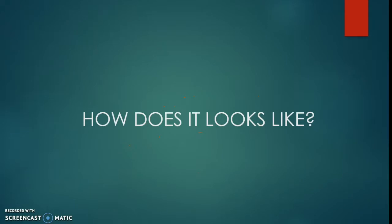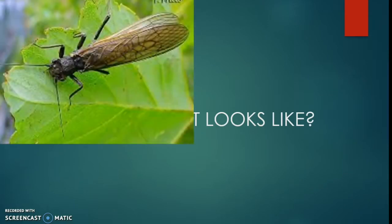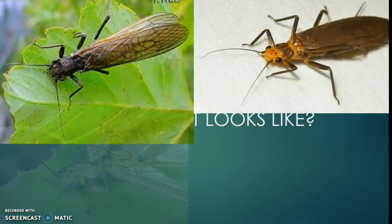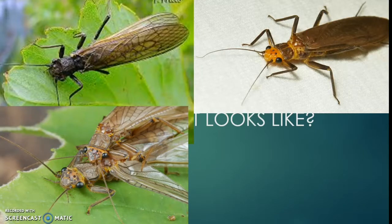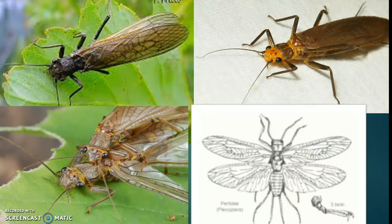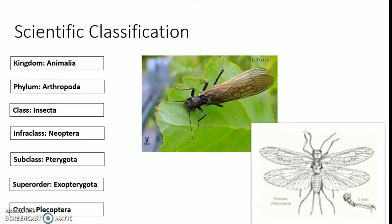First, how does it look? This is a picture of stoneflies if you guys don't know, and the third picture shows the stonefly with its partner, and the fourth picture is a sketch of the stonefly insect. Basically, stoneflies are classified under the kingdom Animalia, phylum Arthropoda, class Insecta, infraclass Neoptera, subclass Pterygota, superorder Exopterygota, and order Plecoptera, which is what we are talking about.